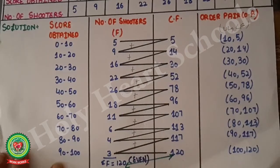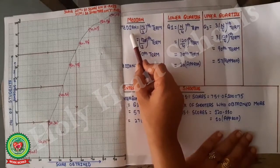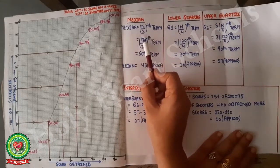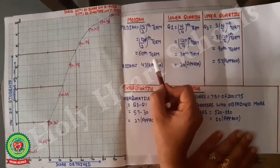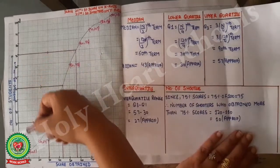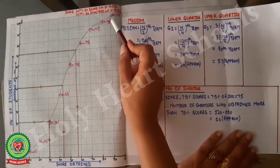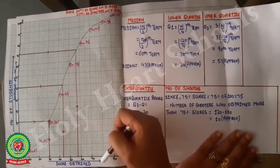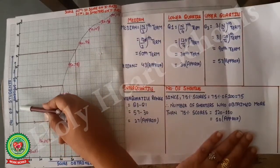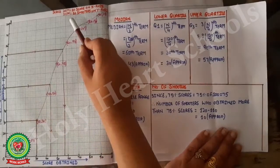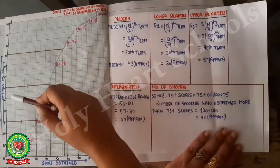Now we will apply all the formulas. For median when n is even, the formula is the (n/2)th term. Here n = 120, so it is the 60th term. We will find this 60th term from the graph. When drawing the graph, write the y-axis, x-axis, origin, information, and scale. The gap is 10, so write 2 cm = 10 score on the x-axis, and the y-axis shows number of shooters with a gap of 10.